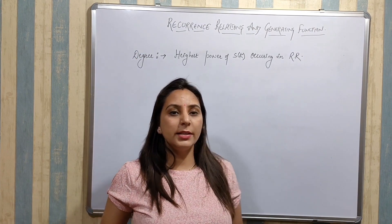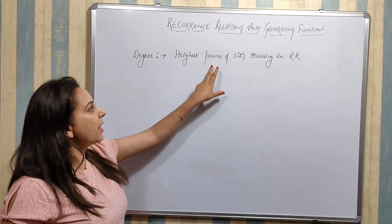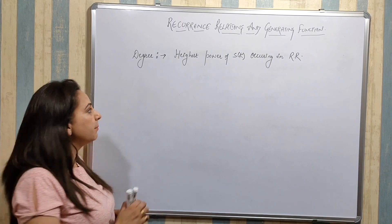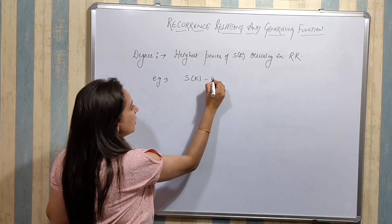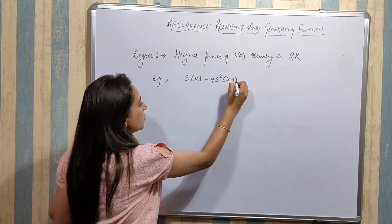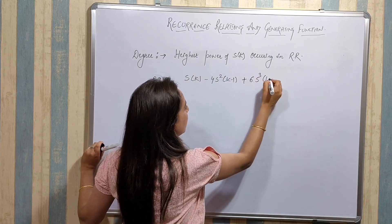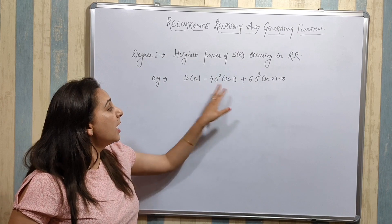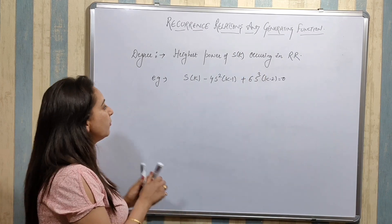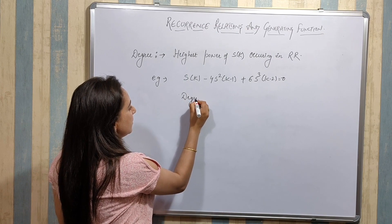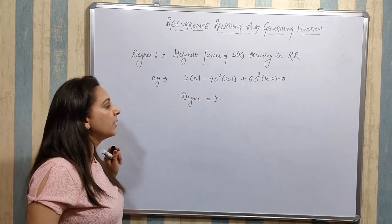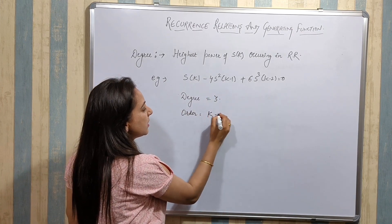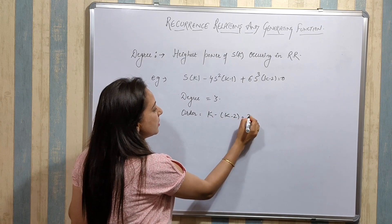The next definition is degree. Degree is the highest power of S(K) occurring in the recurrence relation. For example, in S(K) minus 4·S²(K-1) plus 6·S³(K-2) equals 0, the highest power of S(K) is 3. Therefore, the degree of this recurrence relation is 3. The order here is again 2.